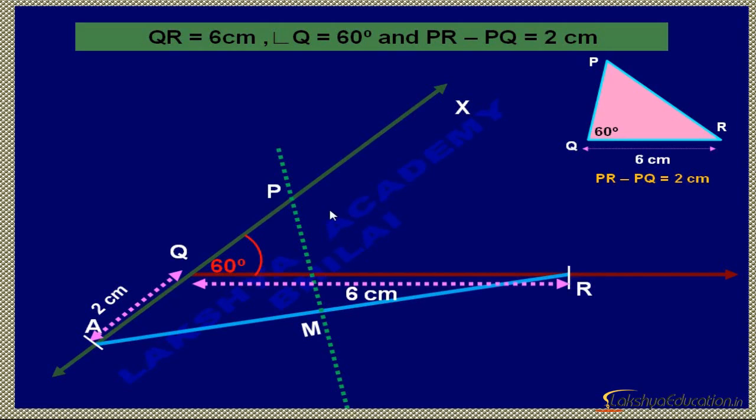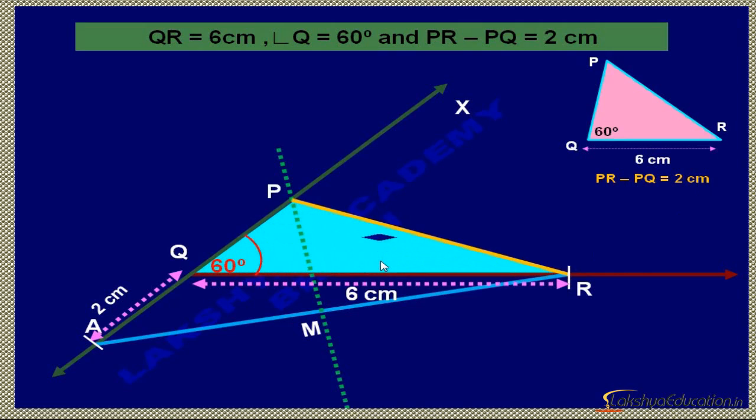Join PR to make triangle PQR. If you measure, PR minus PQ is equal to 2 cm. That is our required triangle.